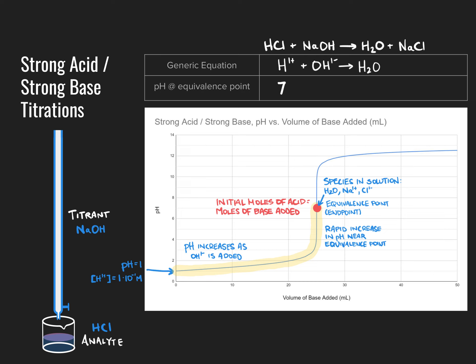Please be very careful on the AP test. When asked why the pH is 7, the reason is not because the acid and base both completely dissociate — dissociation is a property of the acid and base independent of any reaction. What we want to focus on is what is present in solution at the endpoint. The sodium ions and chloride ions do not impact pH, and therefore we have a neutral solution.